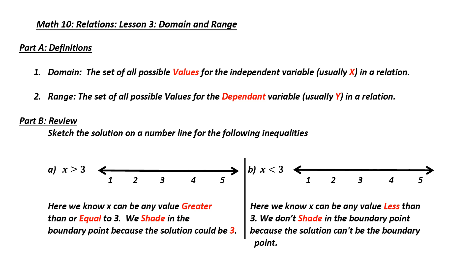Let's start out by sketching a solution on a number line for an inequality. Our first inequality is x is greater than or equal to 3. My first step is to label my boundary point, which is 3. You'll notice that this is shaded in because x can be 3 — it is included in the solution set. We know this because it has a line underneath.